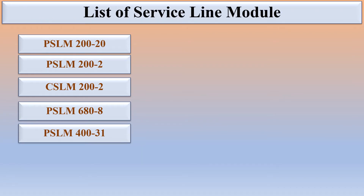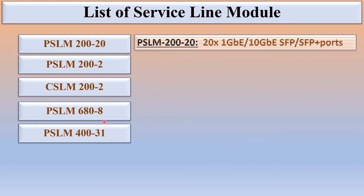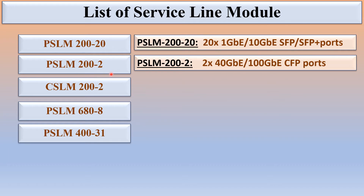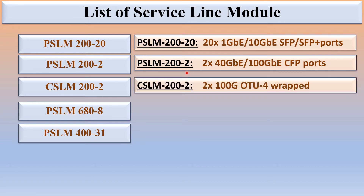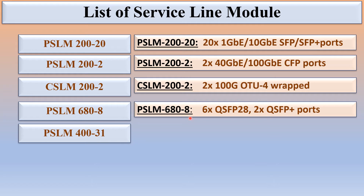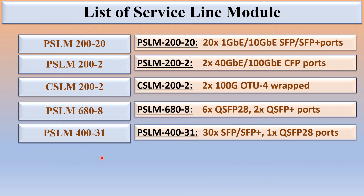Here is the list of service line modules. PSLM 220 has 20 x 1 GB or 10 GB SFP/SFP+ ports. PSLM 200-2 has 2 ports of 40 GB or 100 GB. CSLM 200-2 has 2 x 100 GB OTU4 RAP ports. PSLM 680-8 has 6 QSFP28 ports and 2 QSFP+ ports. PSLM 400-31 has 30 ports of SFP or SFP+ and 1 port of QSFP28.